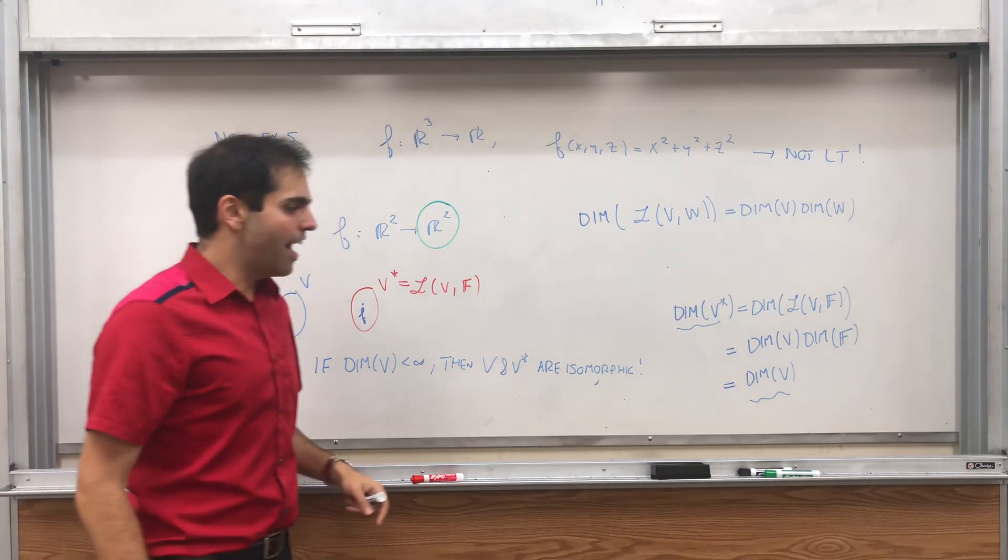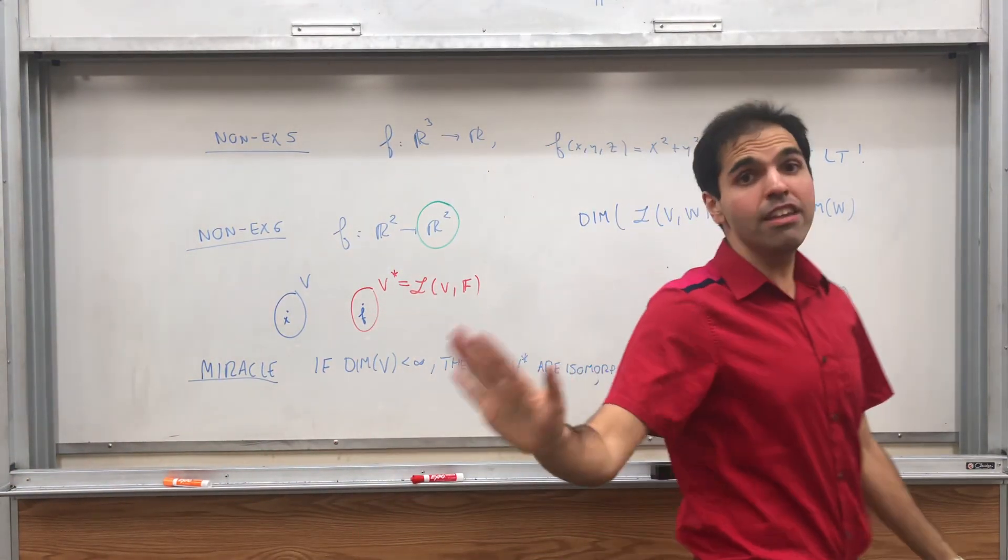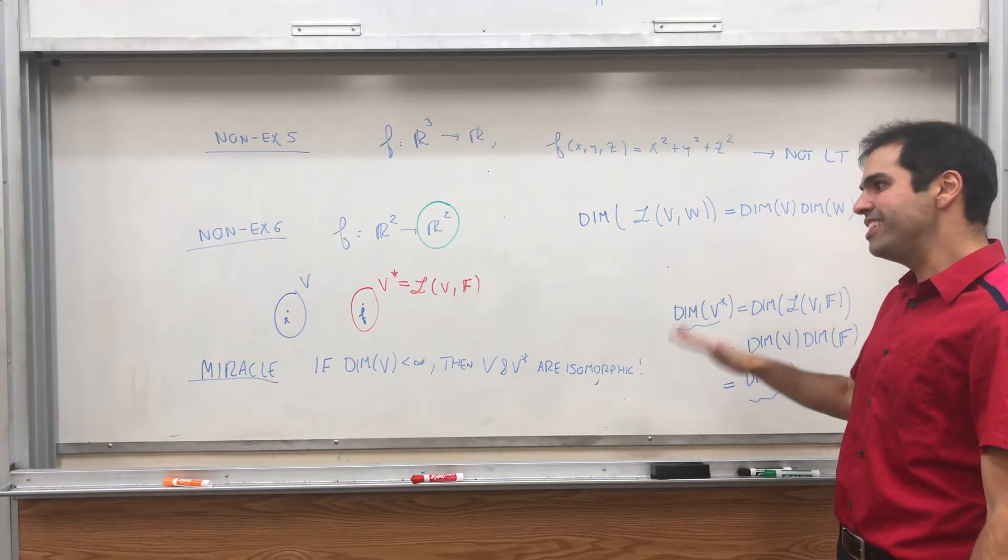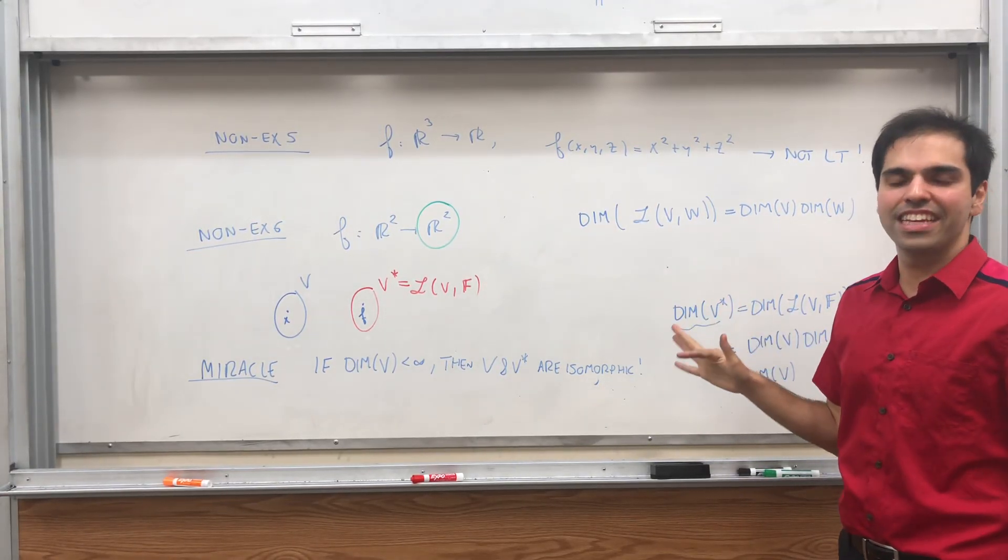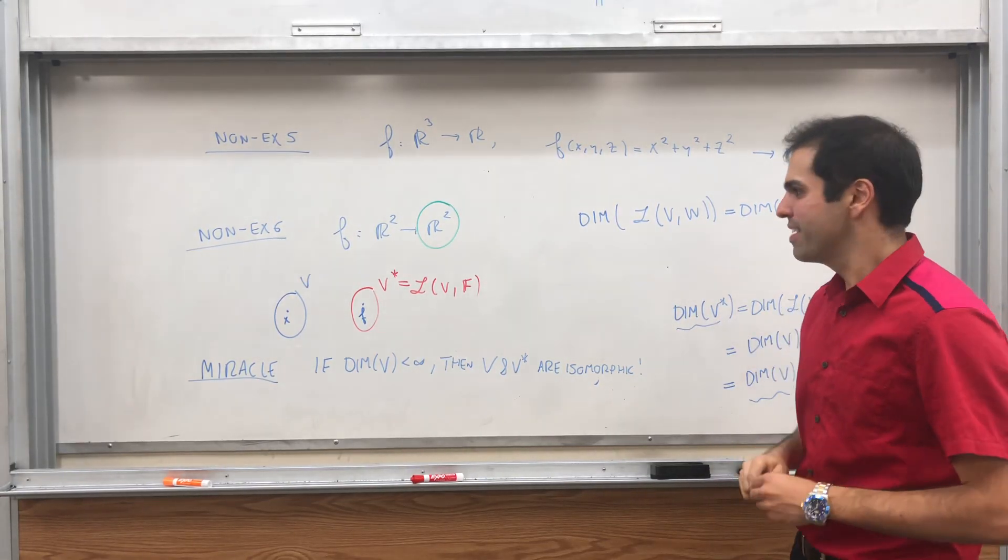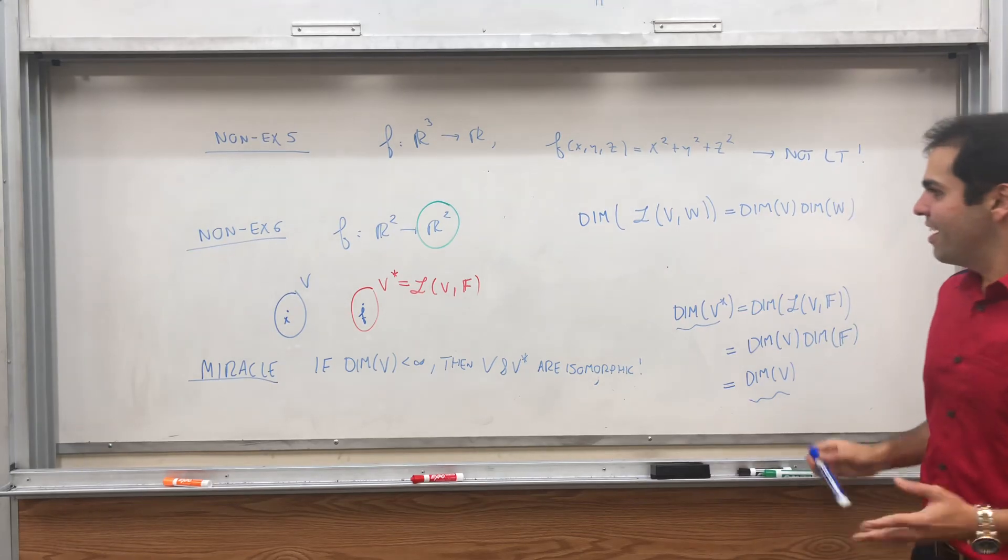And very wrong in infinite dimensions. Generally, V and V star, they don't have the same dimension. Generally, I think V star is much bigger than V.